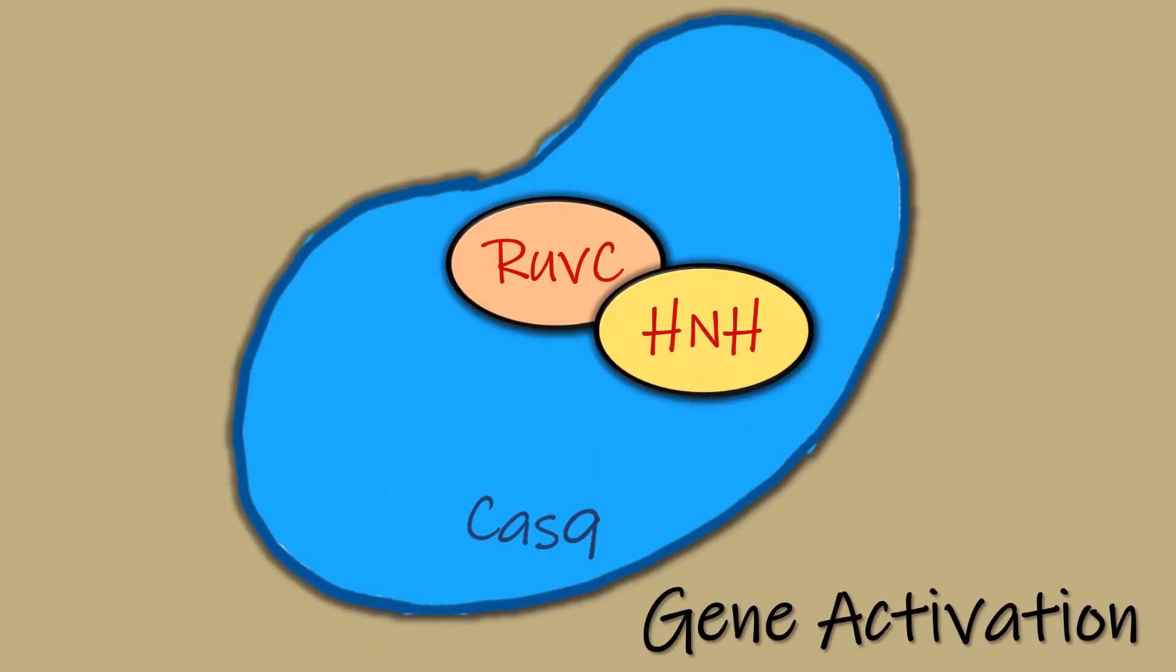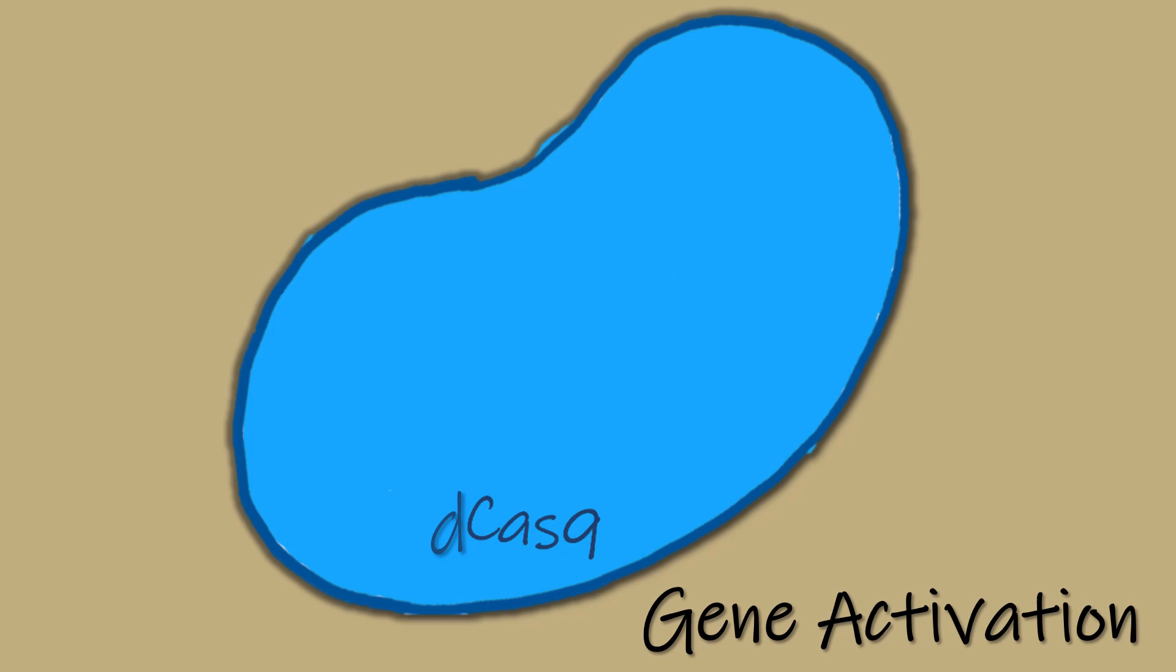As we know, RuvC and HNH do not have any role in target site binding. They play a role in cleavage. Thus, researchers inactivated the two domains by point mutation to create a modified nuclease, dead Cas9, which cannot cleave the target DNA. The dCas9 molecule can now be fused to any activating domain to express a particular gene or it can be fused to green fluorescent protein to visualize genes in live cells using fluorescent microscopy.